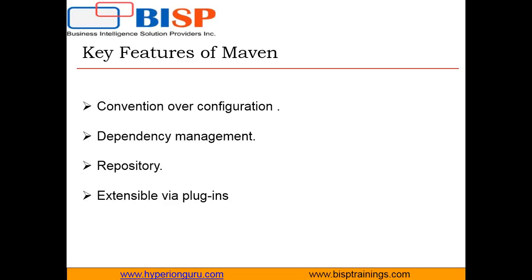The third and most important feature of Maven is the repository. A repository is a place — a directory — where all the project libraries, plugins, or any other project-specific artifacts are stored and can be used by Maven easily. Project dependencies can be loaded from the local file system or from the internet or public repositories. Maven also provides a central repository called Maven Central, which contains a large number of commonly used libraries and artifacts. When Maven does not find any dependency in the local repository, it starts searching in the central repository.